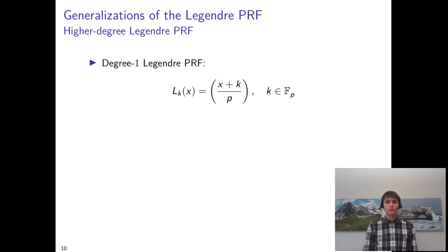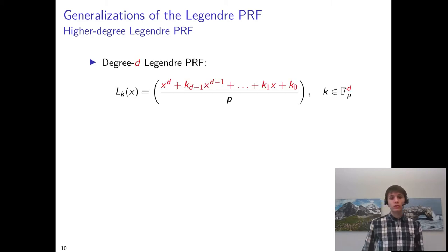The ordinary Legendre PRF can be thought of as a degree 1 Legendre PRF. This is because we are taking the Legendre symbol of a polynomial of degree 1 in the input. One possible generalization is to replace this by taking the Legendre symbol of a polynomial of degree d in the input. The coefficients of this polynomial then form the key.